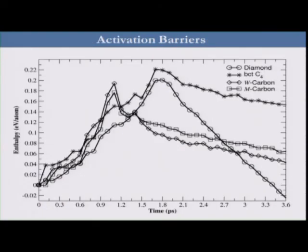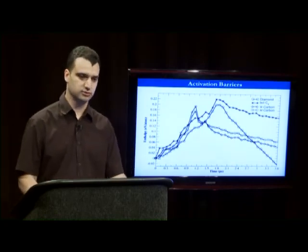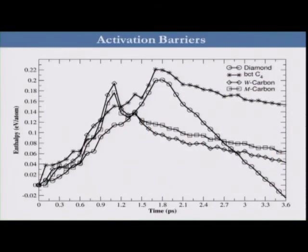If you make an enthalpy ranking of different proposed candidates for super-hard graphite, you can see that M-Carbon is not the most stable — W-Carbon has a lower enthalpy at the transition pressure than M-Carbon. However, this can be explained by plotting the variation of enthalpy along the transition: during the transition, M-Carbon has the lowest activation barrier, which is why it is more favored to form than other structures.